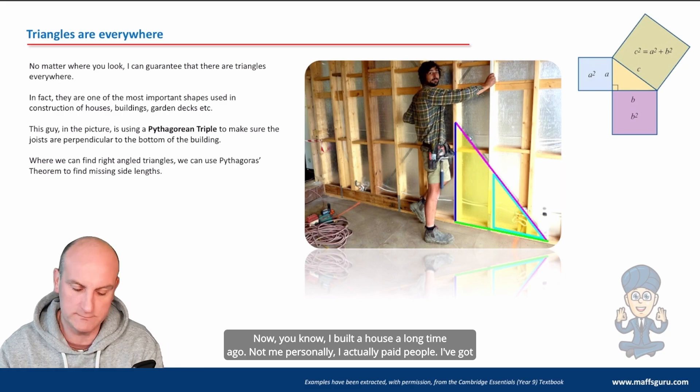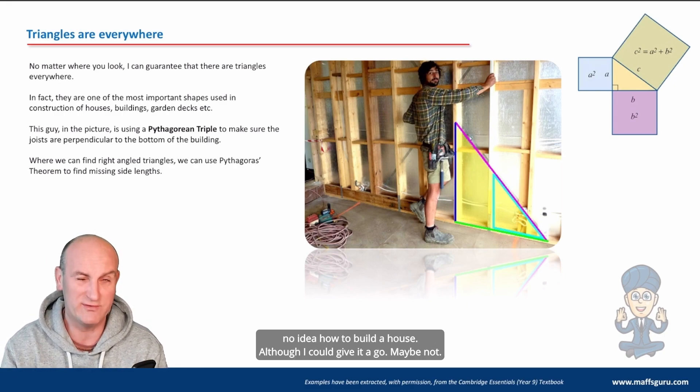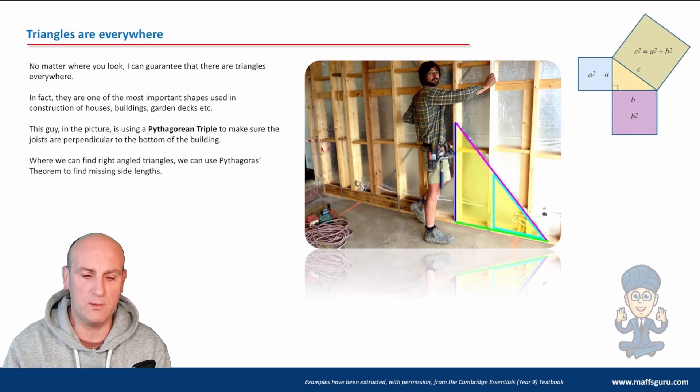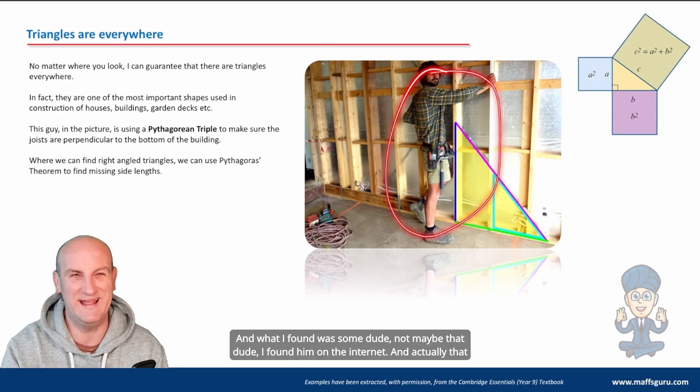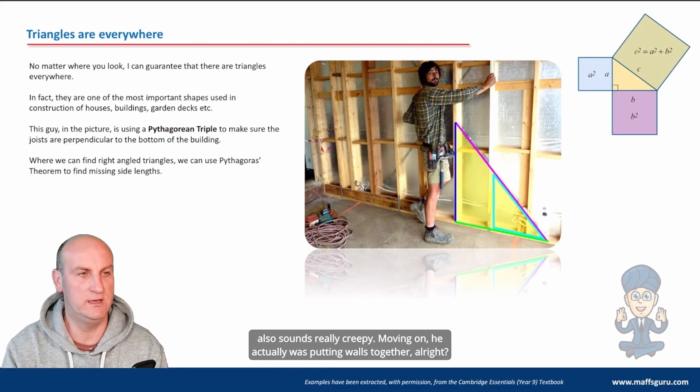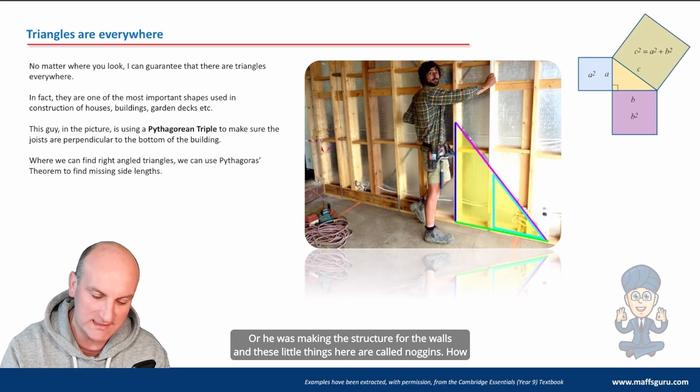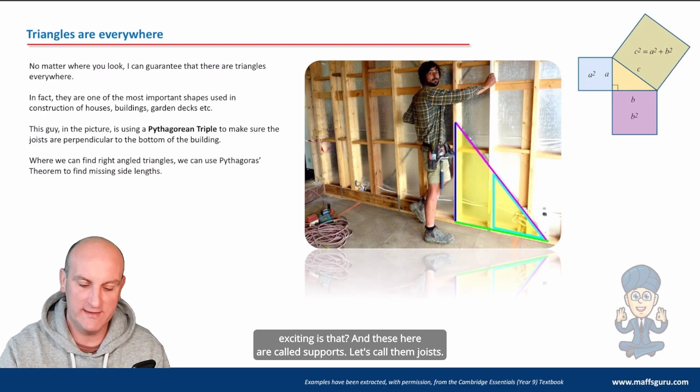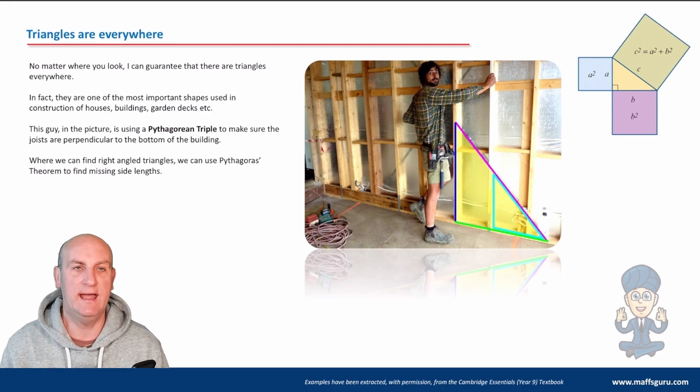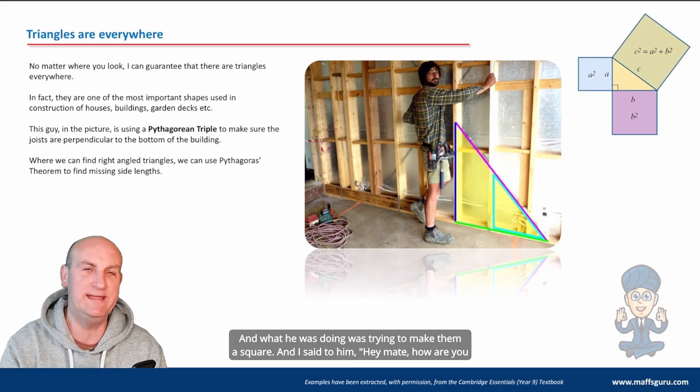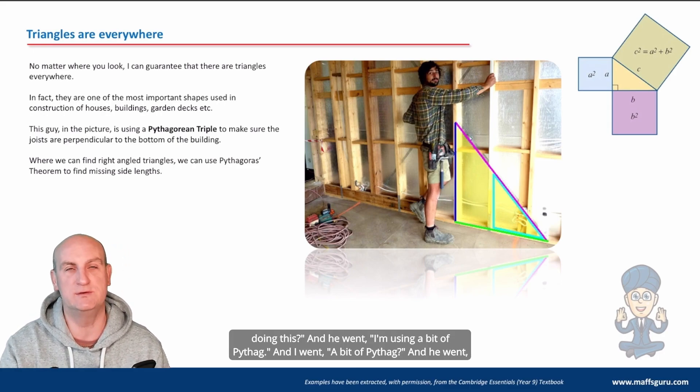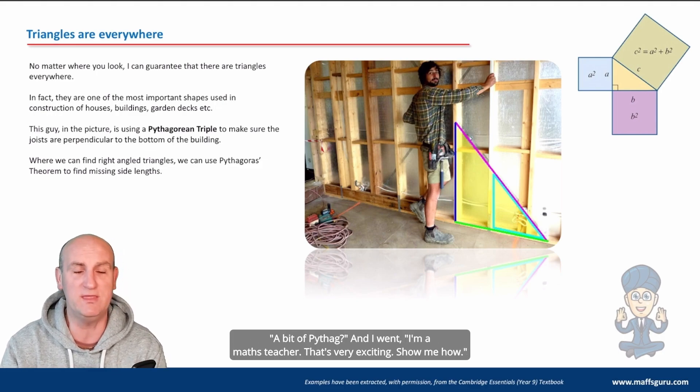Now, I built a house a long time ago. Not me personally, I actually paid people. And what I found was some dude was putting walls together. These little things here are called noggins. And these here are called joists. And what he was doing was trying to make them square. And I said to him, hey mate, how are you doing this? And he went, I'm using a bit of Pythag. And I went, I'm a maths teacher. That's very exciting. Show me how.